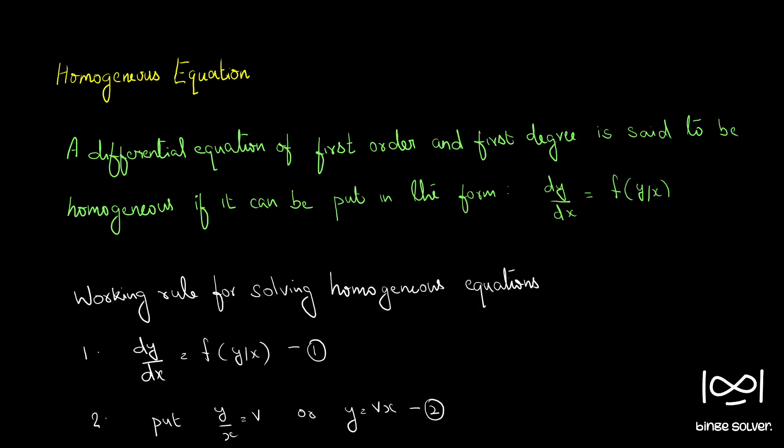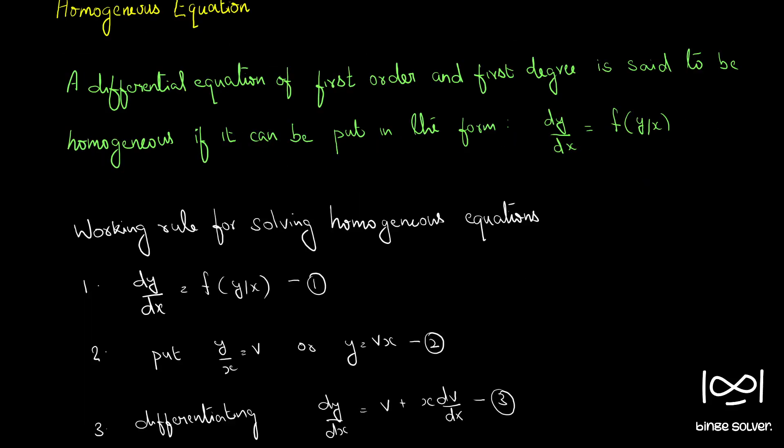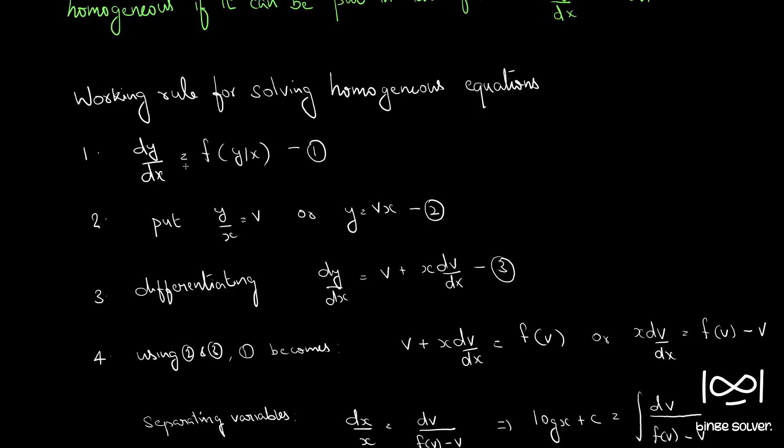Working rule for solving homogeneous equations: first, we will write dy/dx as a function of y/x, and put y/x = v as a substitution. That means y = vx. Differentiating, we get dy/dx = v + x·dv/dx. Now in the equation, we will substitute dy/dx with v + x·dv/dx, and the function of y/x becomes a function of v, since our substitution is y/x = v.